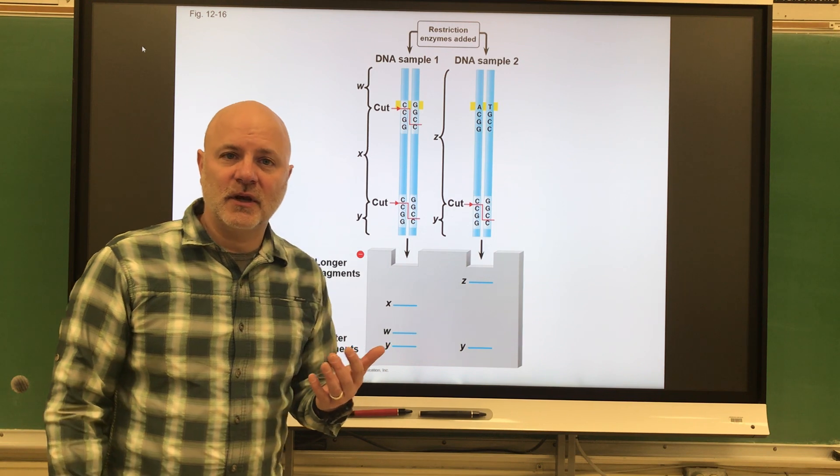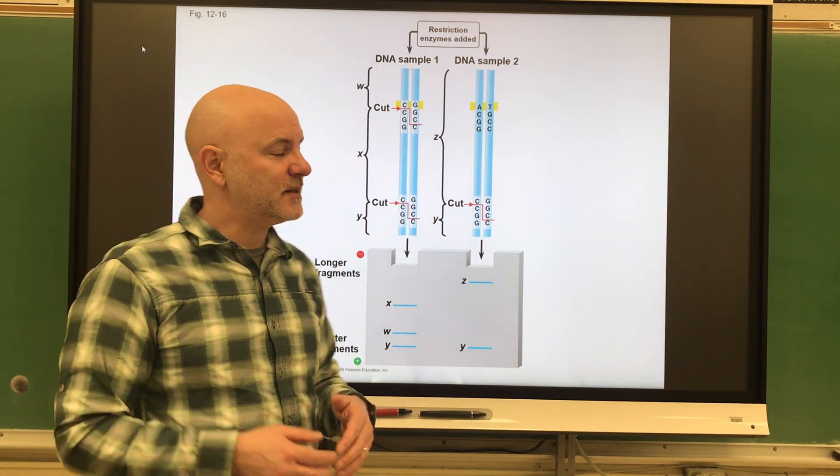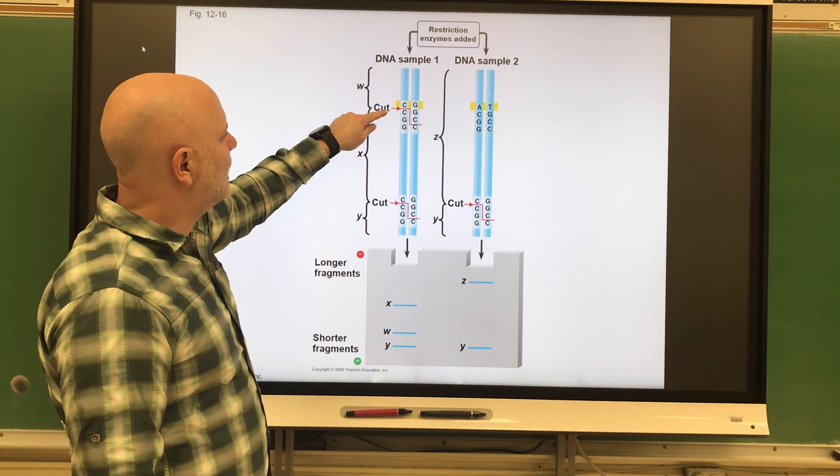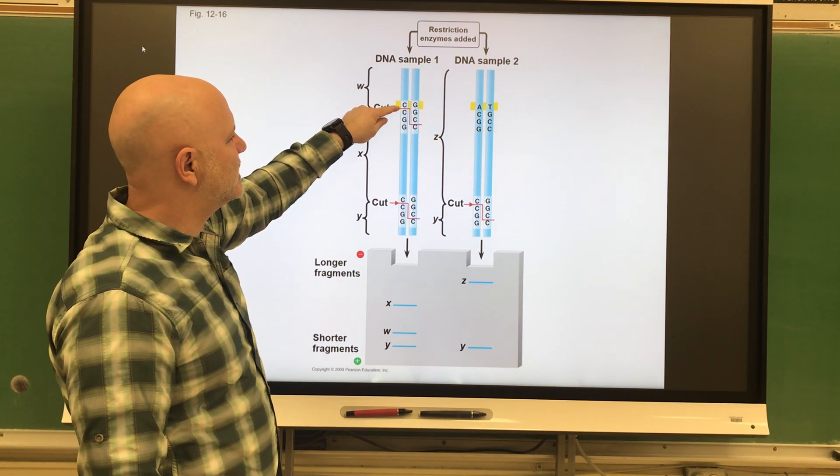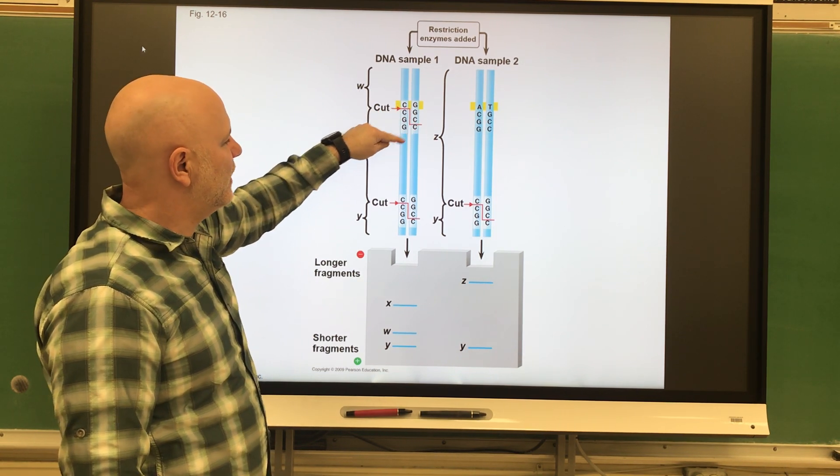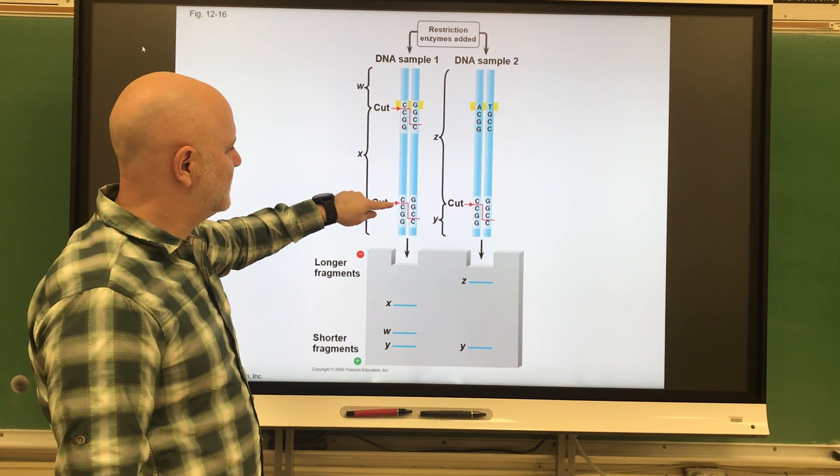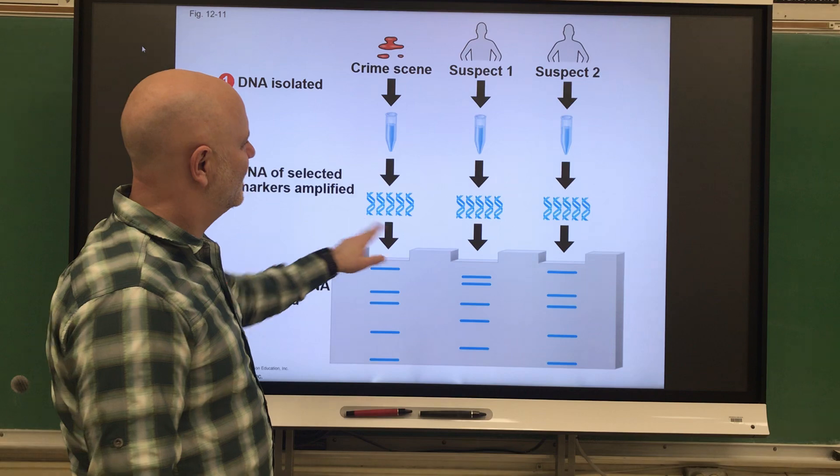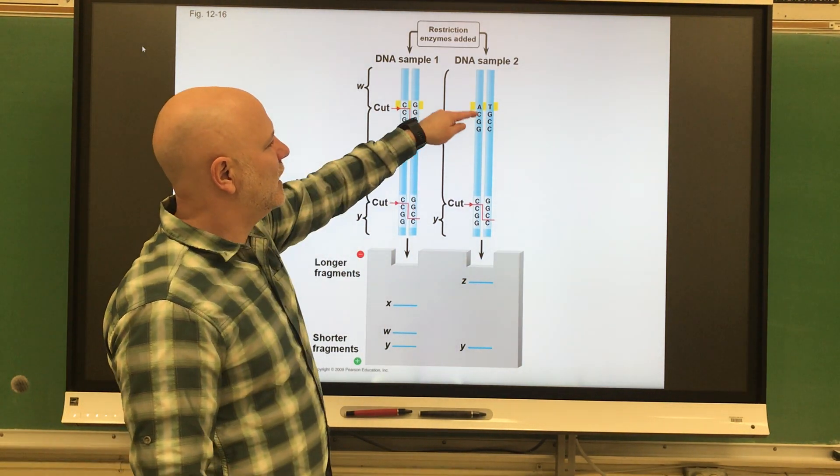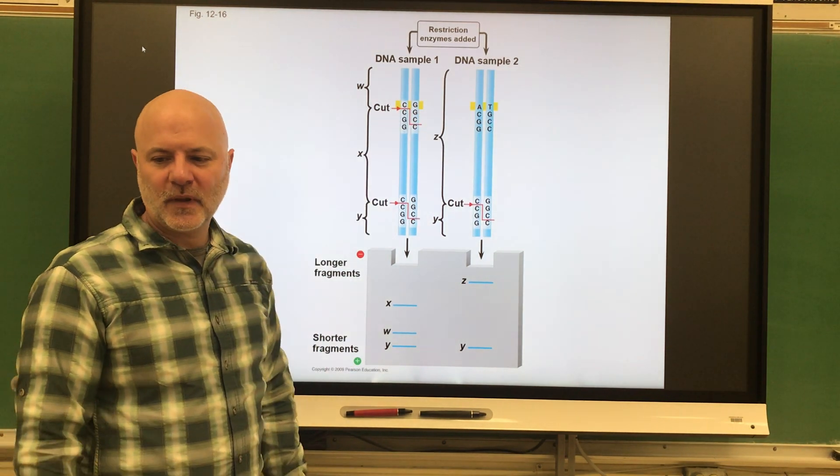In biology, we use restriction enzymes to cut DNA in reproducible ways. In this case, wherever we have the sequence GCCGG, we're going to make it cut there. That's what the restriction enzyme does. We see the same sequence here, it makes it cut there. Over here, you don't have that same sequence, so we don't see the same cut being made.